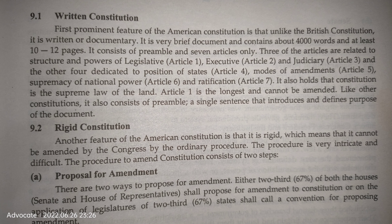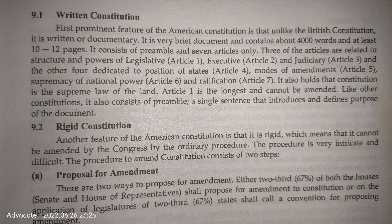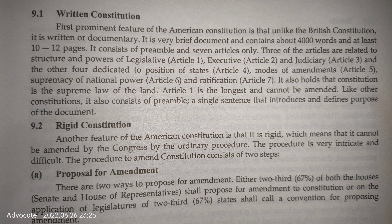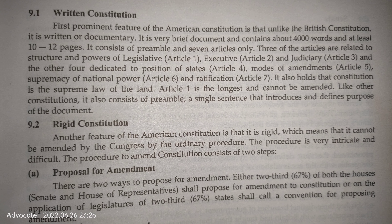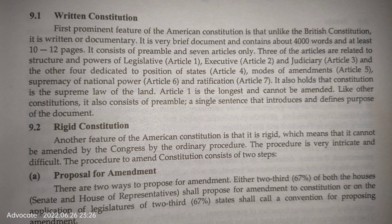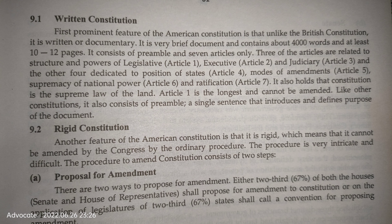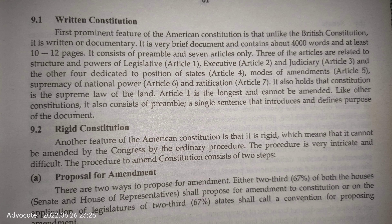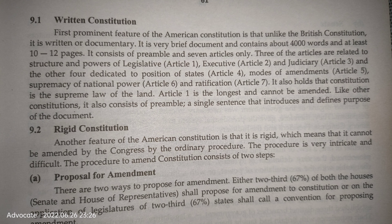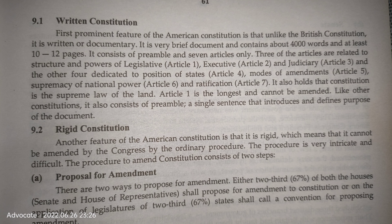It is a very brief document of about 4,000 words and around 10 to 12 pages. It consists of a preamble and seven articles only. Three articles are related to the structures and powers of the legislature (Article 1), the executive (Article 2), and the judiciary (Article 3). The other four are dedicated to the position of states (Article 4), modes of amendment (Article 5), supremacy of national power (Article 6), and ratification (Article 7). The Constitution is the supreme law of the land, and Article 1 is the longest and cannot be amended. The preamble is a single sentence that introduces and defines the purpose of the document.